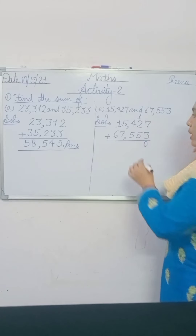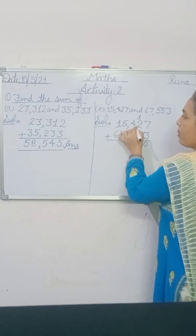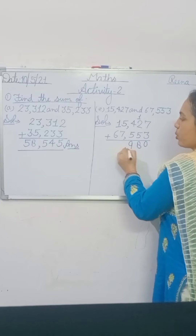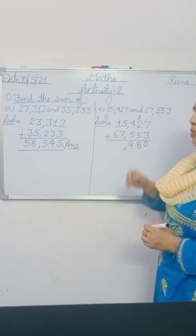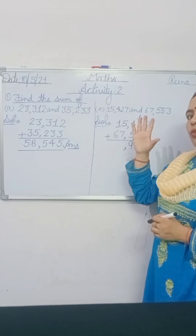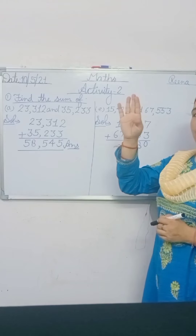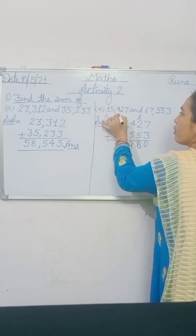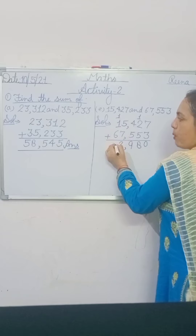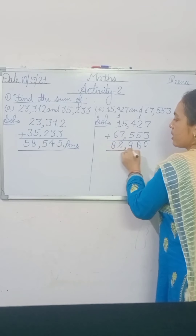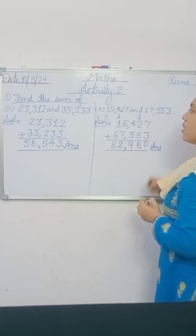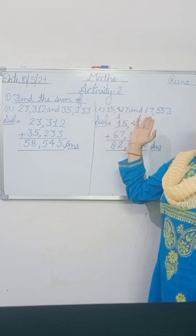2 plus 1 is 3, plus 5 is 8 — write 8 here. 5 plus 4 is 9. Now use comma, then add: 5 plus 7. Your greater number is 7, so after 7 you count 5 fingers: 8, 9, 10, 11, 12. So 12 means 1 is carry and write 2 here. And 1 plus 1 is 2, plus 6 is 8. That means 82,980 is the answer of question number 2.